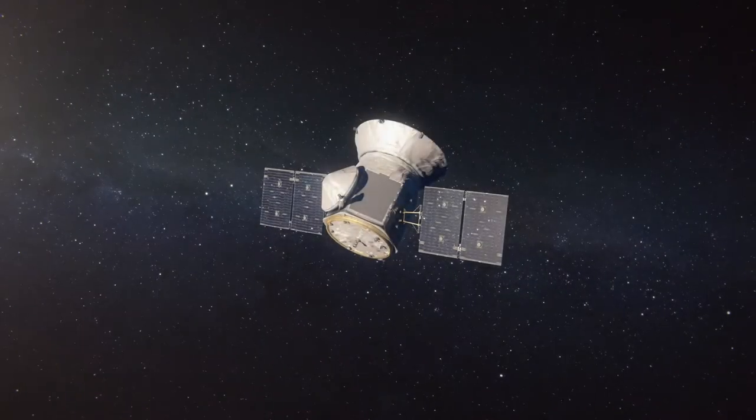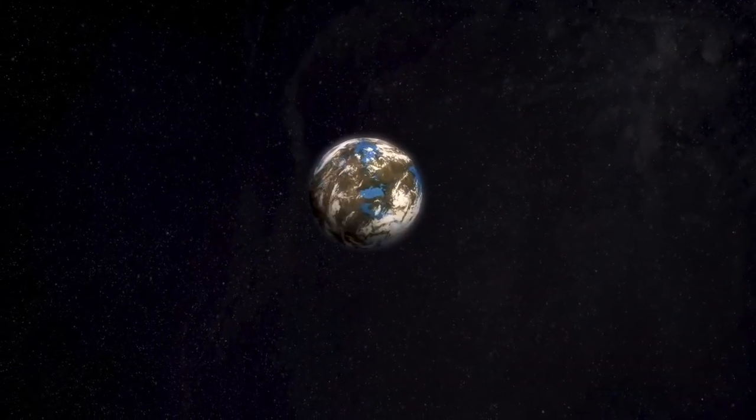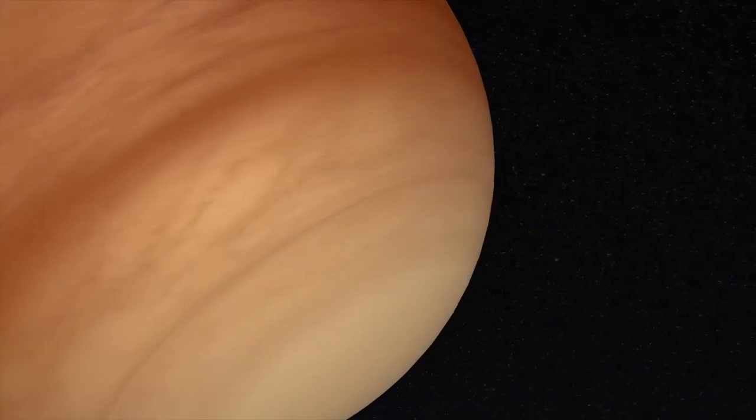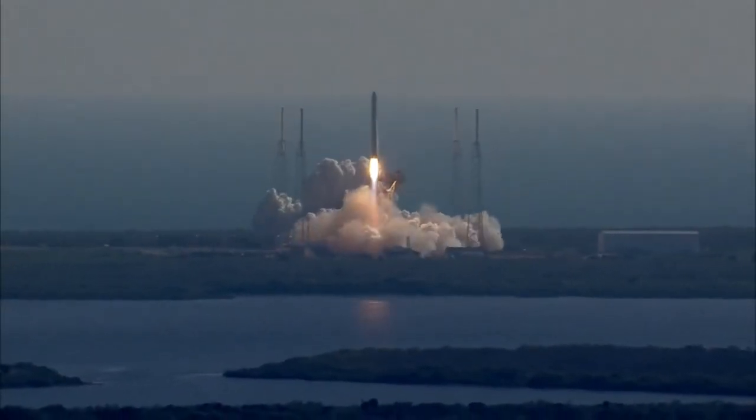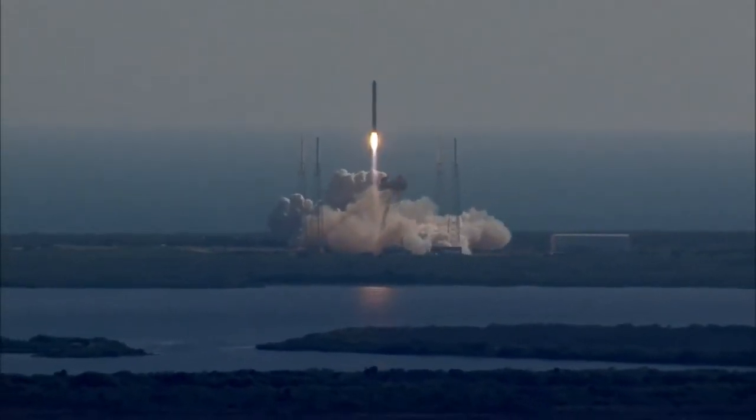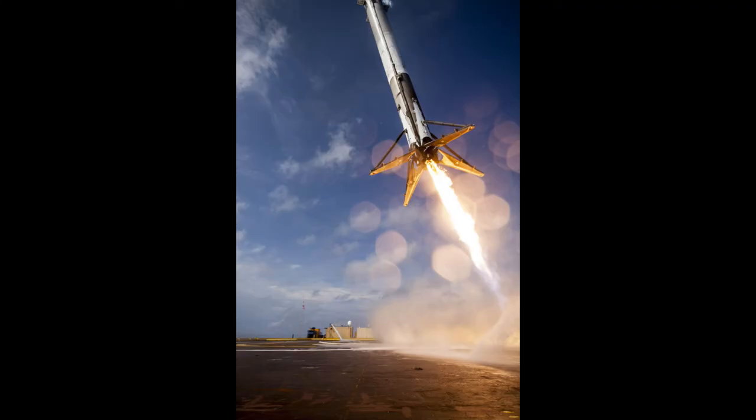TESS, the Transiting Exoplanet Survey Satellite, is a so-called exoplanet hunter of NASA and the MIT. TESS was launched with the Falcon 9 rocket of SpaceX in April 2018. After releasing TESS, the second stage of the Falcon 9 returned to Earth to process an experimental water landing as part of SpaceX's attempt to develop rocket reusability.